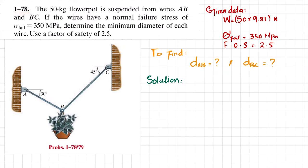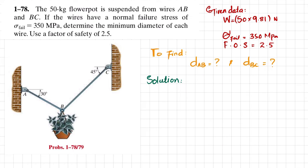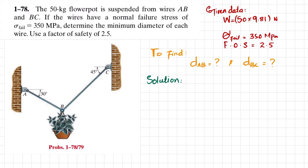Welcome back, problem 1.78. A 50 kg flower pot is suspended from wires AB and BC. If the wire has a normal failure stress of 350 megapascals, determine the minimum diameter of each wire using a factor of safety of 2.5. The weight is 50 multiplied by 9.8 newtons. We need to find the diameter of wire AB and diameter of wire BC.